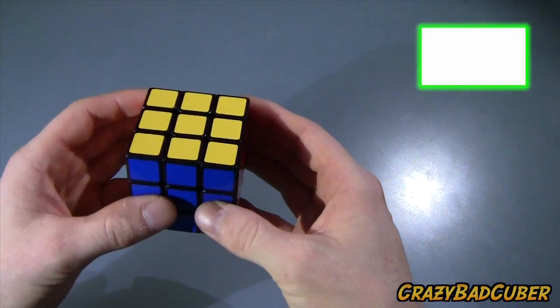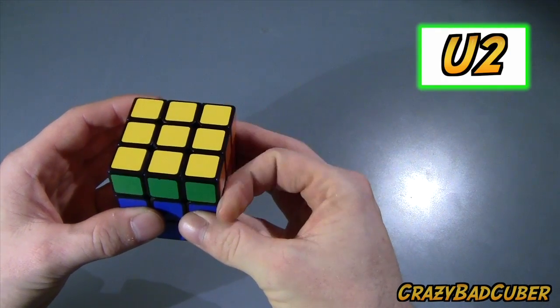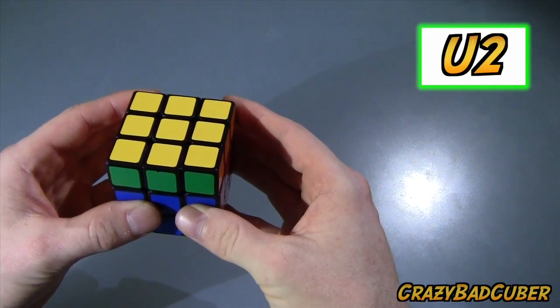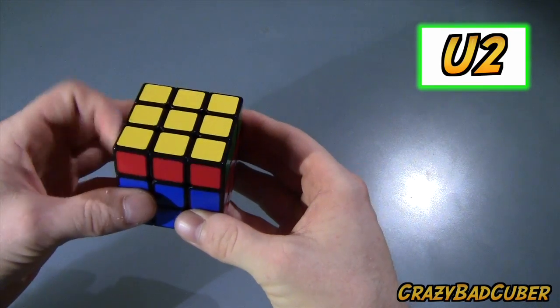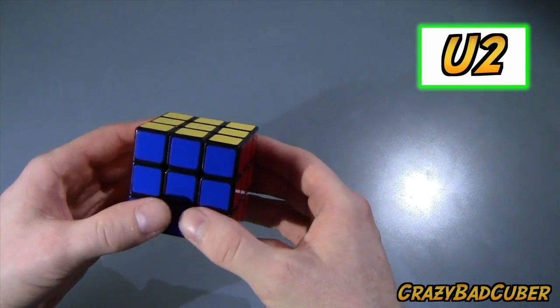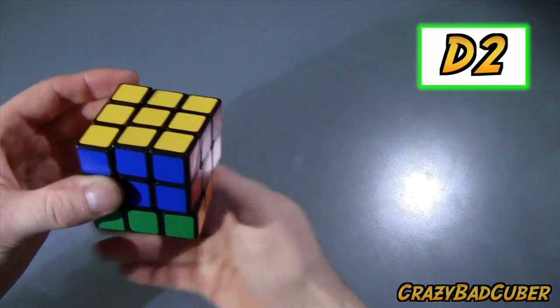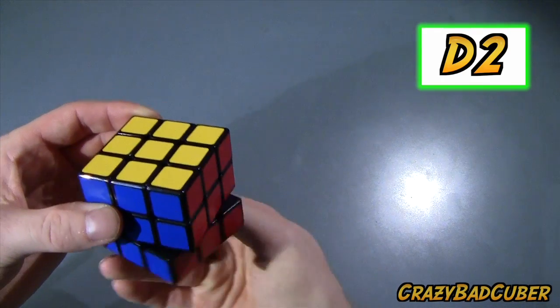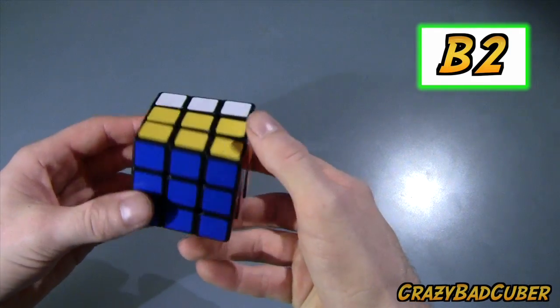Now another one is sometimes you'll have a move that says U2. And that means you turn it twice, 180 degrees. And it doesn't matter which way you turn it. You could turn it clockwise 180 degrees or counterclockwise 180 degrees. It doesn't really matter. So when we see a D2, that means the down one 180 degrees. Same with B2. That means the backside 180 degrees.